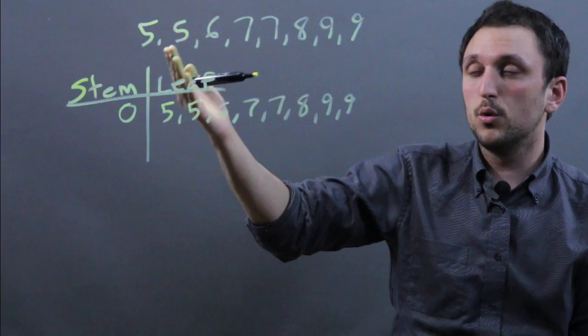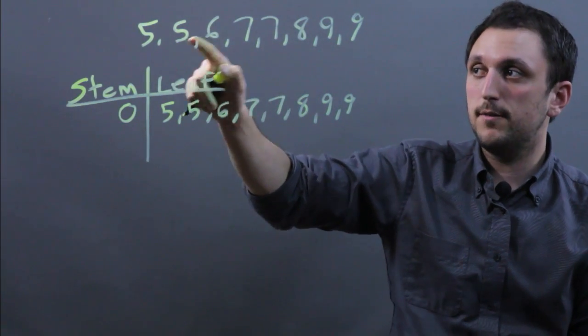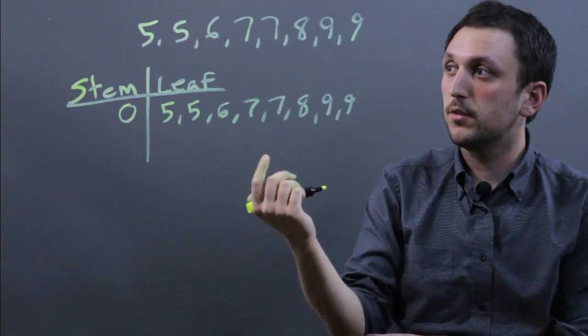So this could be calculating, say, a group of kids, ages 5, 5, 6, 7, 7, 8, 9, and 9, and so on.